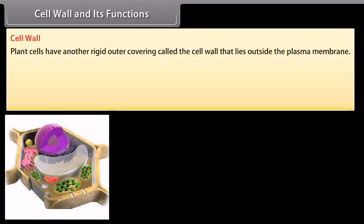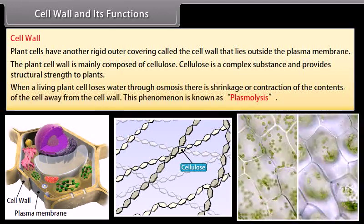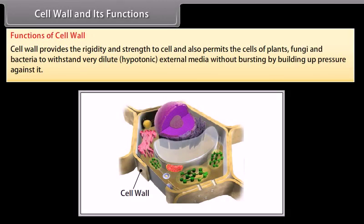Cell wall and its functions: plant cells have another rigid outer covering called the cell wall that lies outside the plasma membrane. The plant cell wall is mainly composed of cellulose, a complex substance that provides structural strength to plants. When a living plant cell loses water through osmosis, there is shrinkage or contraction of the contents of the cell away from the cell wall — this phenomenon is known as plasmolysis. The cell wall provides rigidity and strength to the cell, and also permits the cells of plants, fungi, and bacteria to withstand very dilute hypotonic external media without bursting, by building up pressure against it.